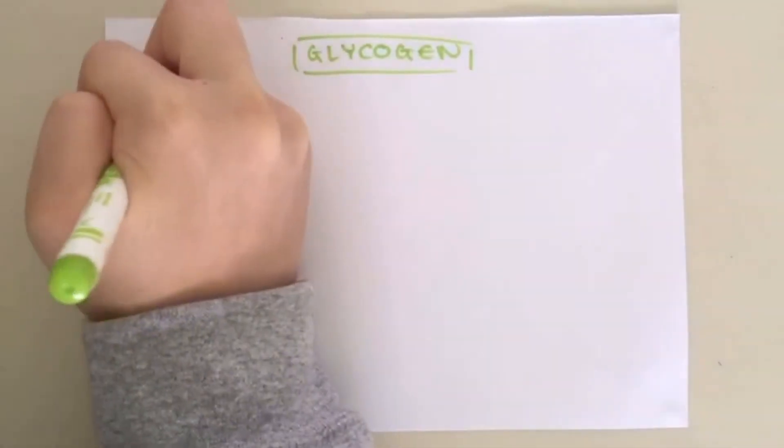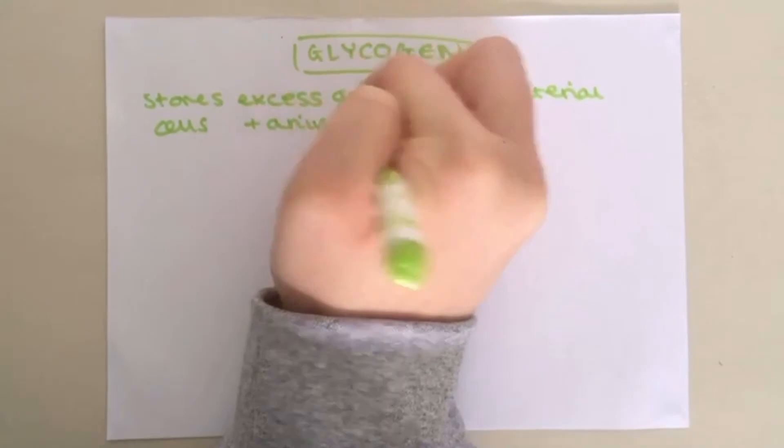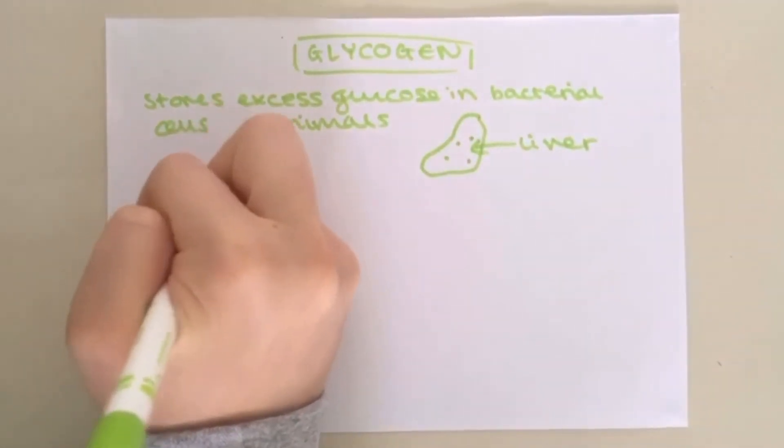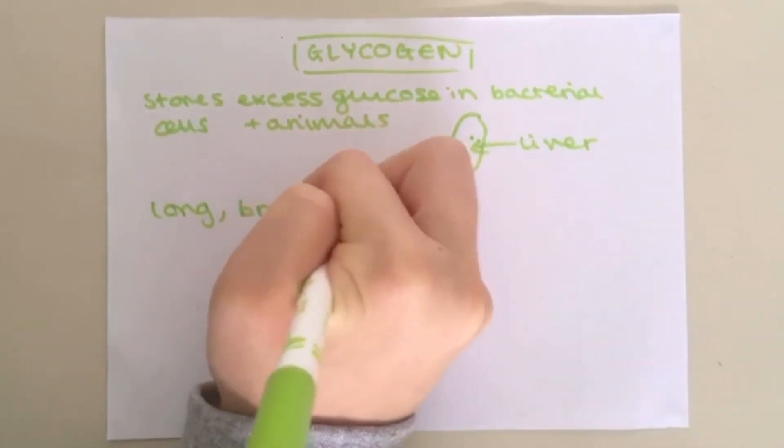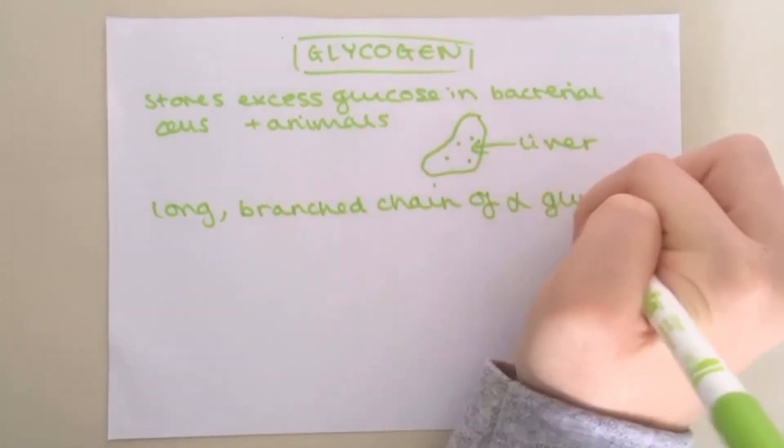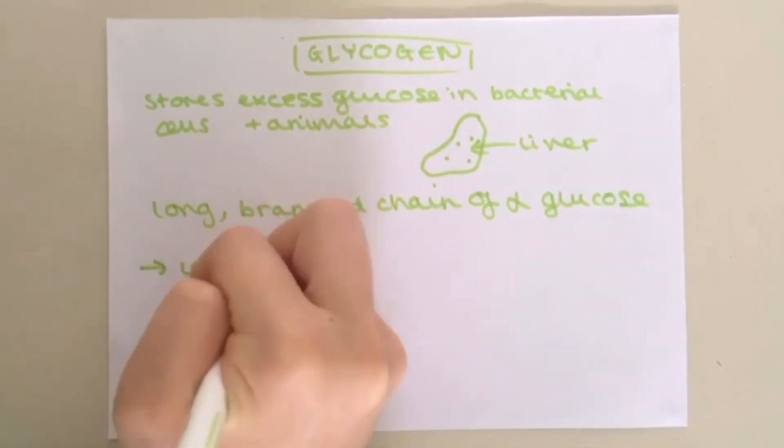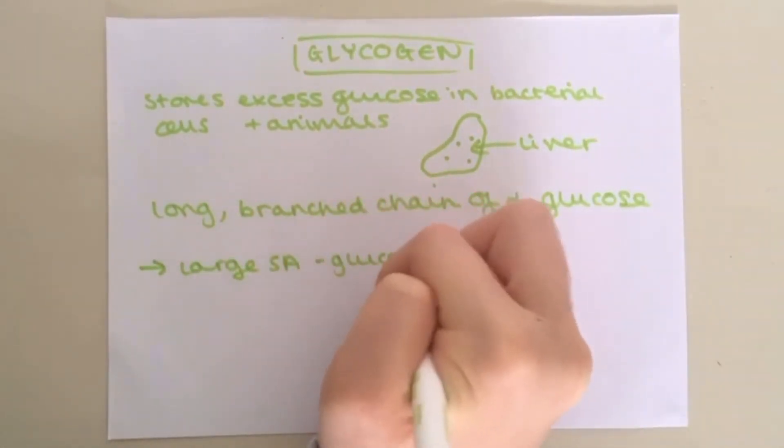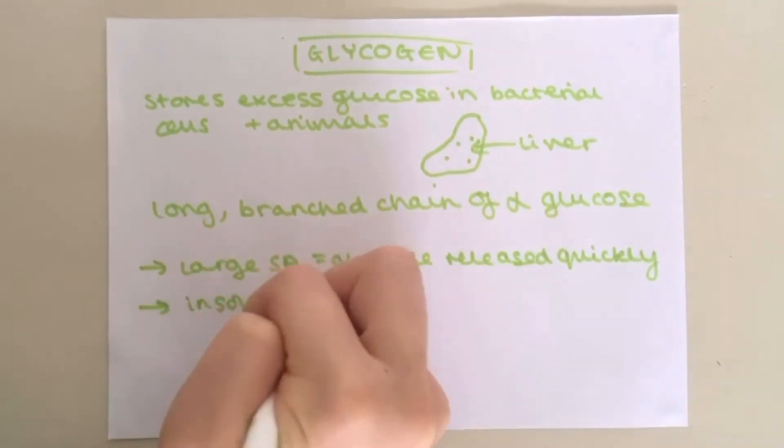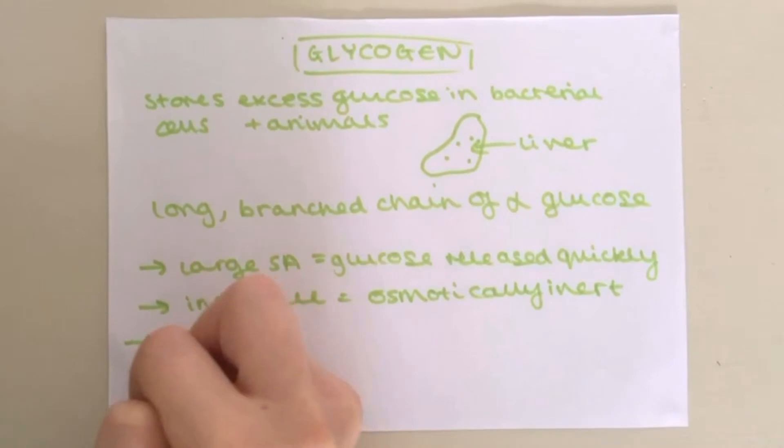Glycogen is a polysaccharide used to store excess glucose in animals as small grains in the muscles and the liver. It has a similar structure to amylopectin, that is long branched chain of alpha-glucose, except there are loads more side branches coming off of it. These side branches mean that the stored glucose can be released quickly due to the large surface area. Like starch, glycogen also is insoluble therefore it is osmotically inert plus it has a compact shape.